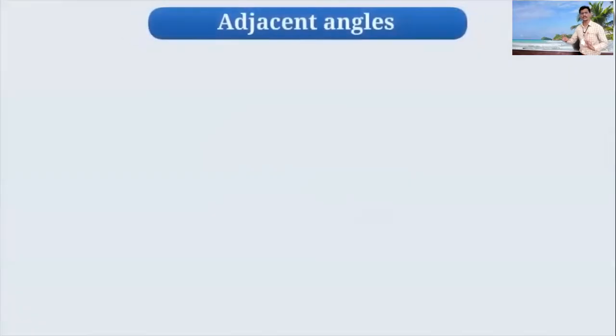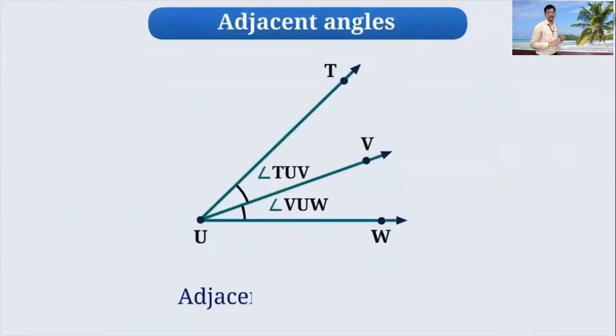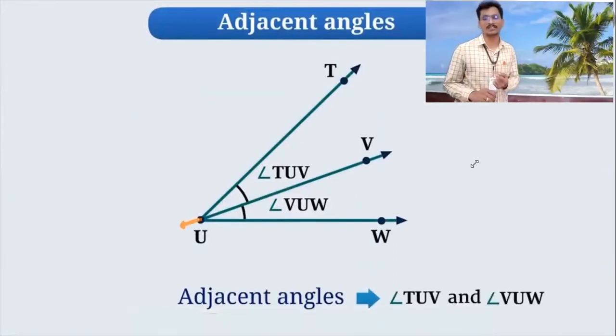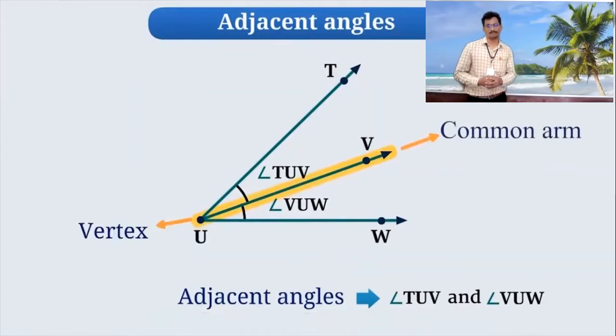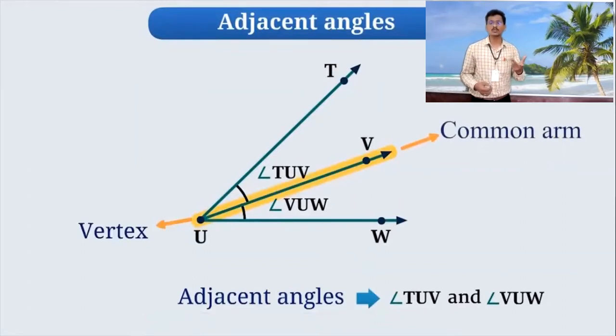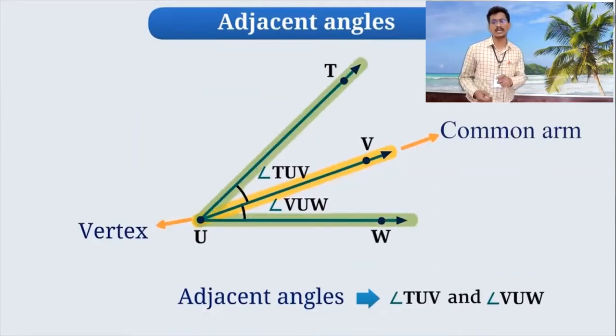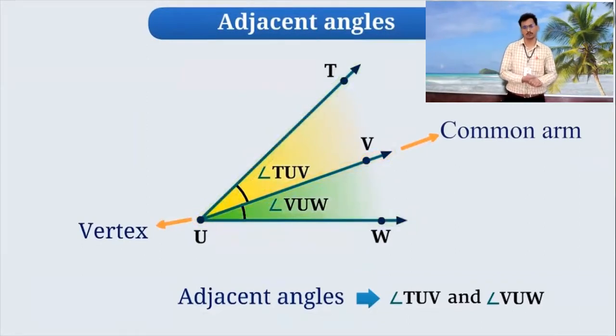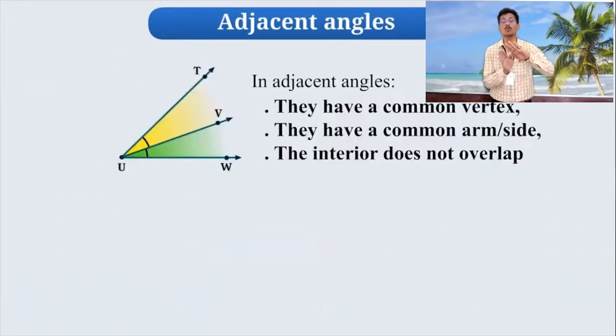So dear children, you already know about the concept of adjacent angles. Look, adjacent angles TUV and Angle VUW, these are angles because of this common vertex and because of this common arm. Now because of this common vertex and common arm, we will get two angles, Angle TUV and Angle VUW. Now if you will check, these two are not overlapping.